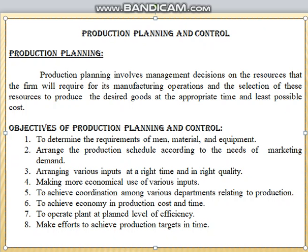Moving on to the objectives of production planning and control, what are the basic objectives of production planning? First, the management has to find the requirements in the firm, i.e., the number of workers requirement, machines requirement, and then raw materials requirement.